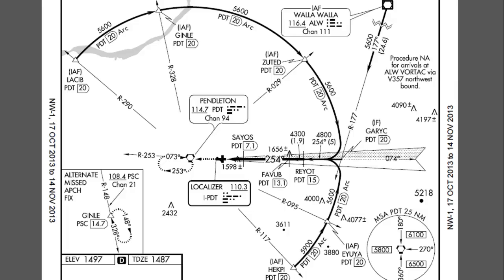Situational awareness is key when flying an arc, mainly because at some point you're going to have to turn inbound on the approach. Many pilots aren't paying attention and end up flying past the inbound course. On some approaches like the one we were looking at before, there's actually a lead radial depicted — a point where you want to start retuning for the final approach course and intercept it. However, there are a lot of approaches like this one that don't have a lead radial, and you just have to know where you are. In most of these cases, you're going to intercept somewhere out here and have quite a ways to fly before you finally get to the final approach course.